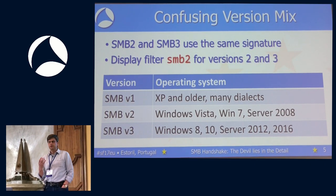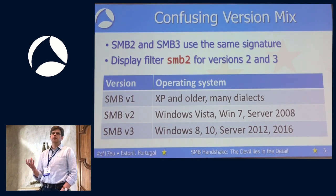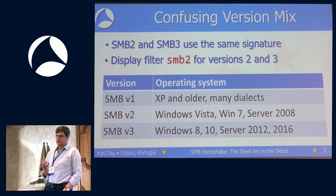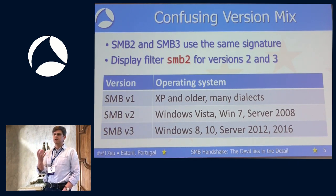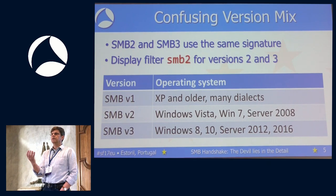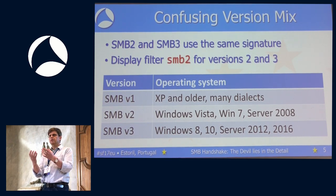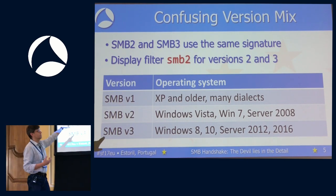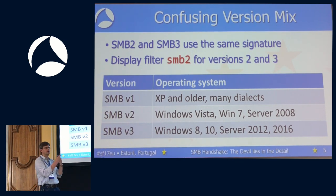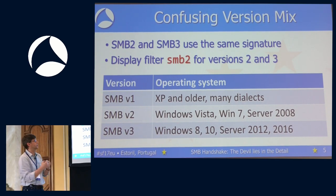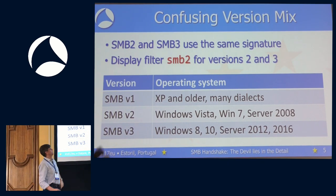Starting with Windows 8, Microsoft added a version number bump to SMB3 — a marketing decision. The internal packet structures and the signature that makes Wireshark decide if a packet is SMB or SMB2 has been left intact. It is the same signature for SMB2 and SMB3. Therefore, Wireshark decodes everything as SMB2. Wireshark cannot currently discern SMB3 — though we know the version from the handshake — and will display both version 2 and 3 under the display filter SMB2.